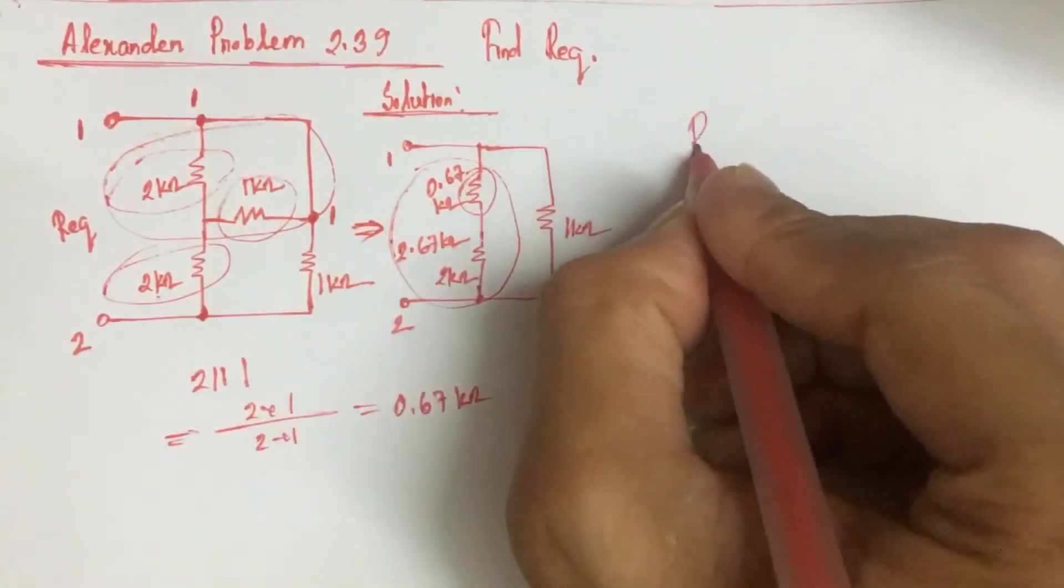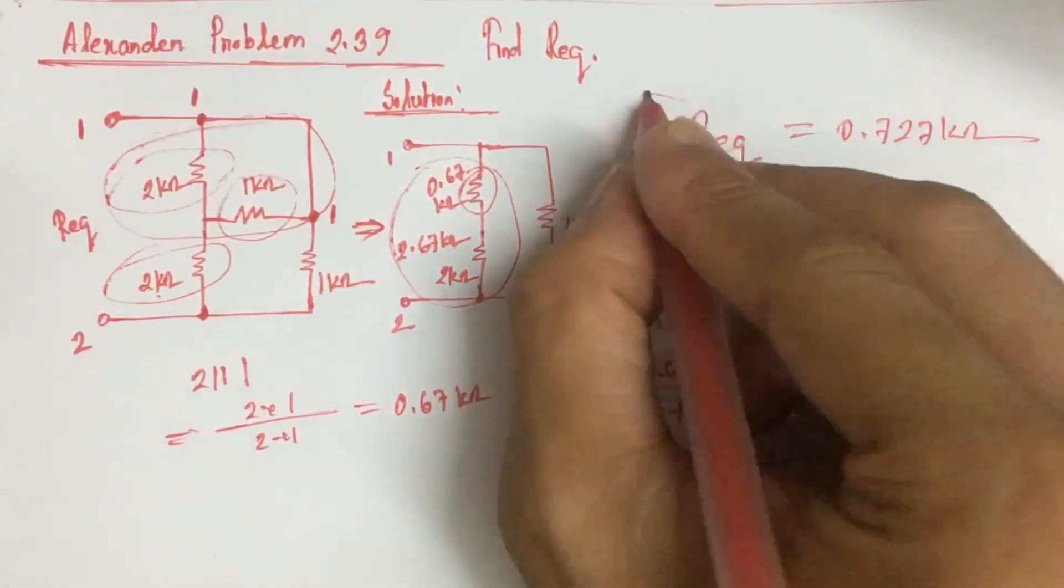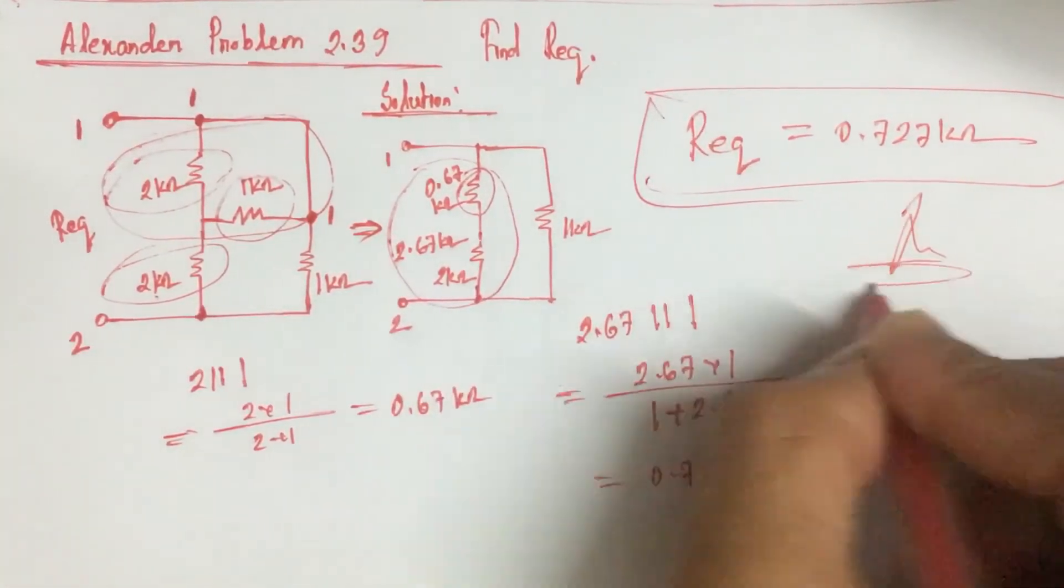Here the R equivalent is 0.727 kilo ohm. This is the answer. Thank you.